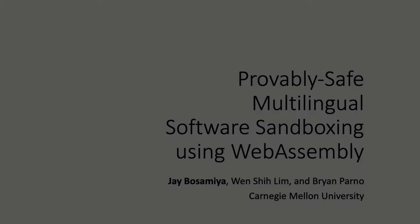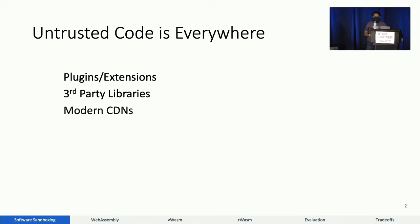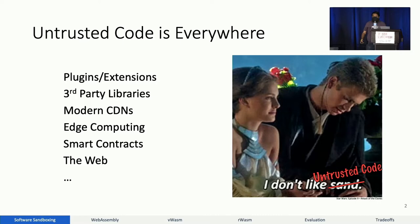Today I'm going to talk about how you can take some of the ugliest, most terrible code you can find, put it into your process, and still somehow survive. Untrusted code is everywhere — with plug-ins, extensions, libraries — and somehow we still need to run it.